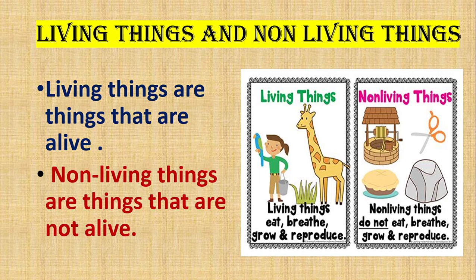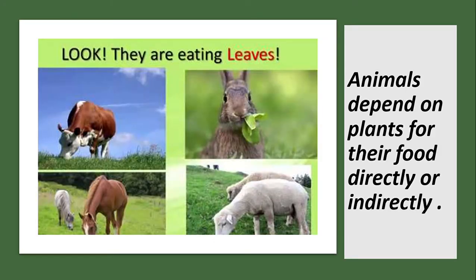Non-living things are the things that are not alive; they do not eat, breathe, grow, or reproduce. We know that plants are living things — they can grow, breathe, and prepare their own food. All animals also directly or indirectly depend on plants for their food.